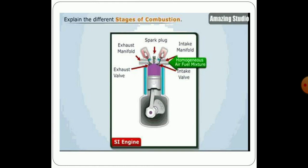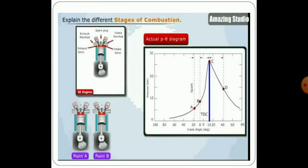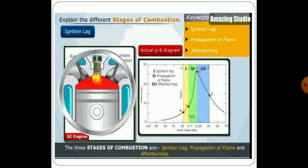On screen, you can see the different stages of combustion: the homogeneous mixture highlighted in green and red arrows showing the exhaust valve, exhaust manifold, spark plug, and intake manifold. The different stages under which the combustion chamber moves — propagation of flame and the after-burning stage — are shown. This covers combustion stages and different aspects of IC engine combustion. Thank you very much.